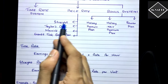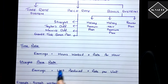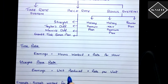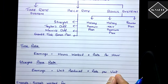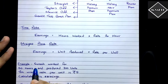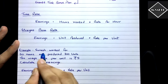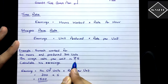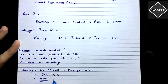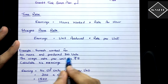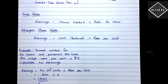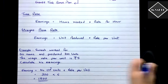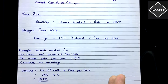Under the straight piece rate system, Earnings = Units Produced × Rate per Unit. It is based on production — how many pieces the worker has produced multiplied by the rate per unit. For example, Suresh worked for 50 hours and produced 300 units, with a wage rate of ₹5 per unit. So 300 × 5 = ₹1,500 would be Suresh's earnings under the straight piece rate system. Very simple — units produced multiplied by the rate per unit.